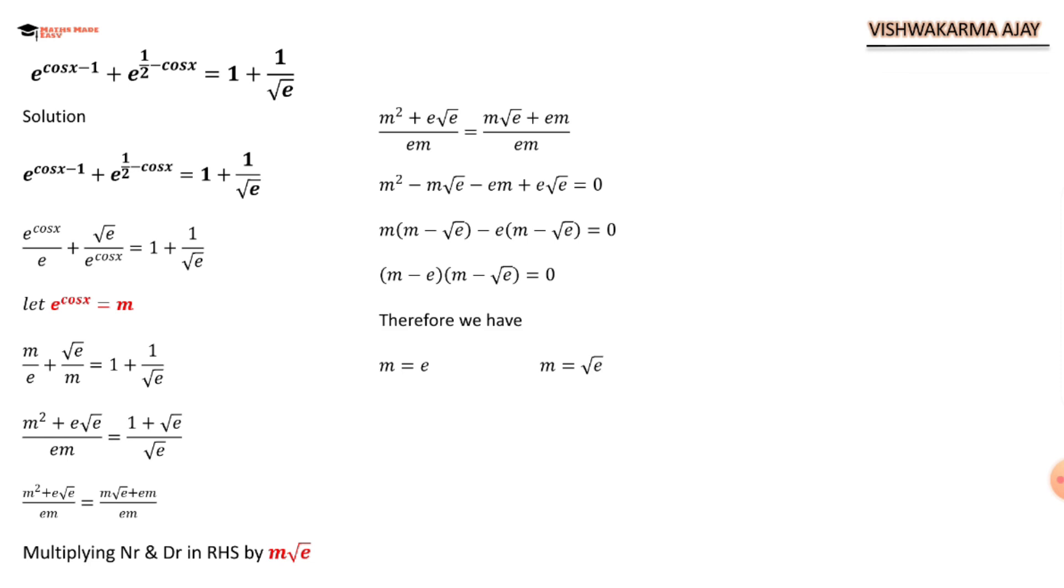Therefore we have two values of m that is e and root e. But the value of m actually is e raised to cos x. So let us substitute here. Now, again we are going to use the law of indices that says a to the power m is equal to a to the power n. Then we can say that m is equal to n. So since here e to the power cos x and e to the power 1, e to the power cos x is equal to e to the power 1/2. So the value of cos x is 1 and the value of cos x is 1 upon 2.